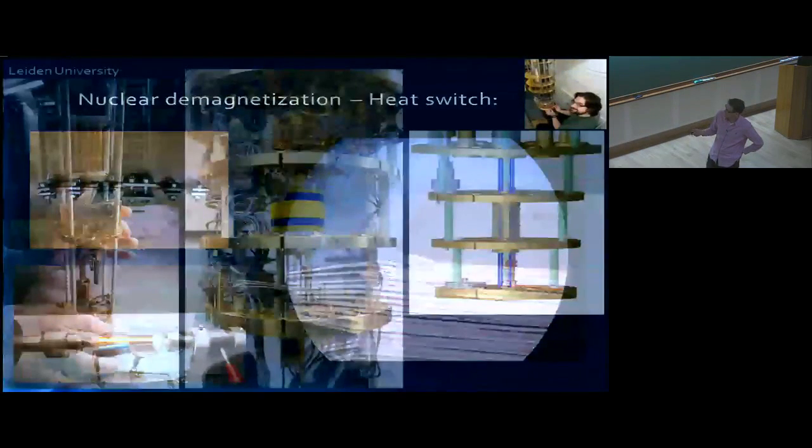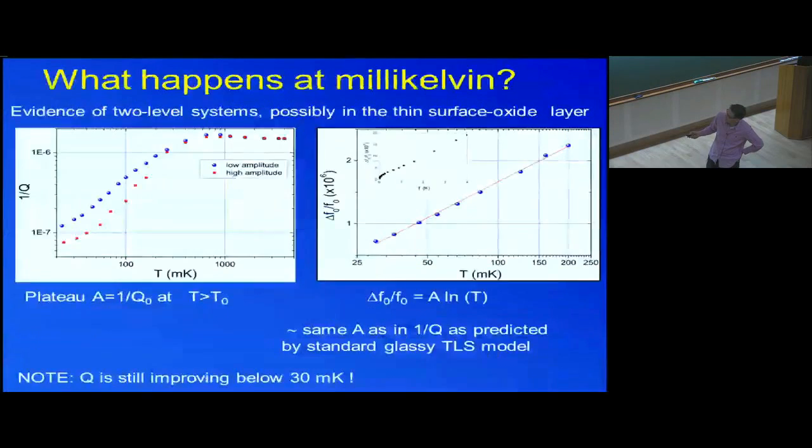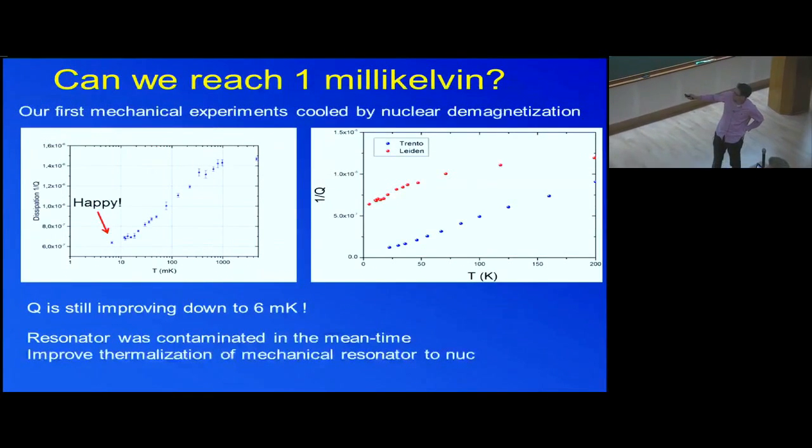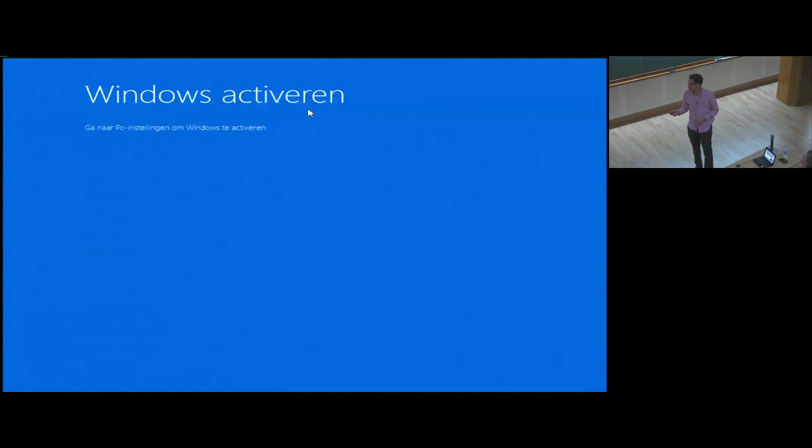And this is the less than one, less than 10 millikelvin work. So here, this is the mechanical resonator that Andrea presented. He could cool it down to 20 millikelvin. We went down to 5 millikelvin. And it continues to have a Q. But it was contaminated between this experiment and that. So we have, we hope to see the damping go down all the way to here. But there was something else in parallel. It's telling me that I should pay money to Microsoft. Otherwise, I cannot continue. But thank you for your attention.